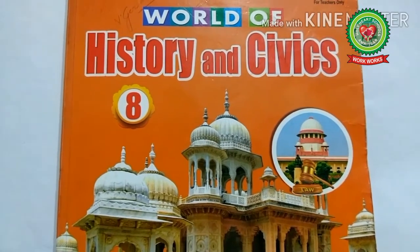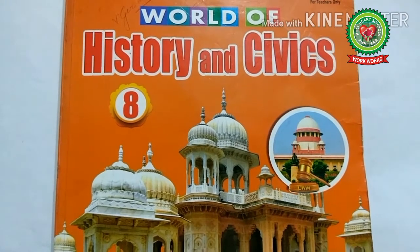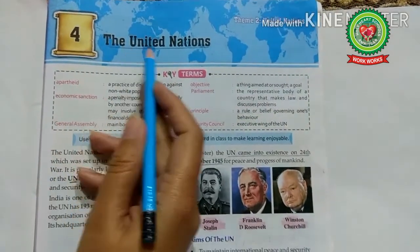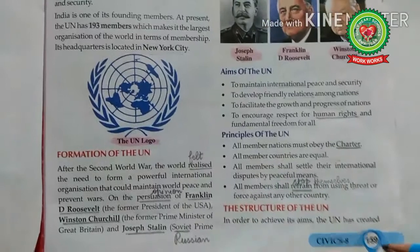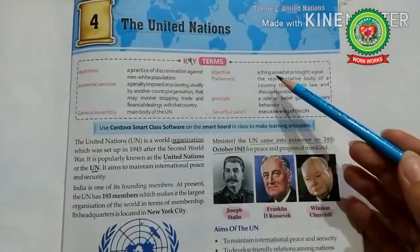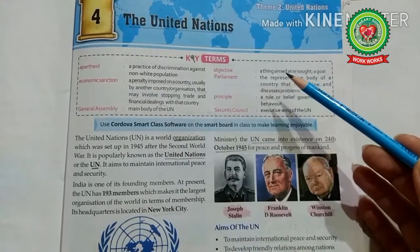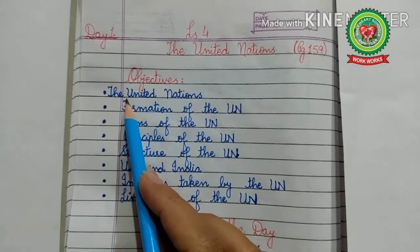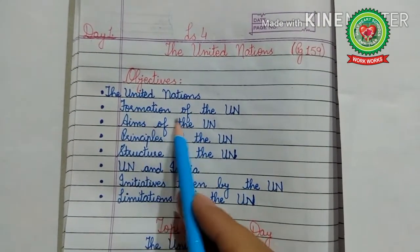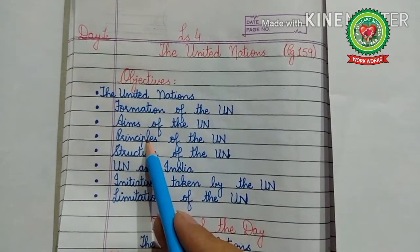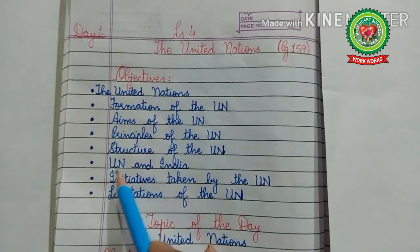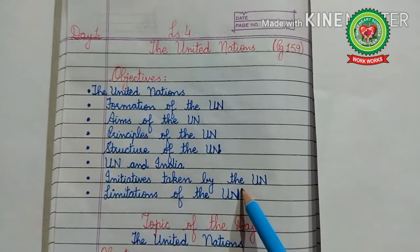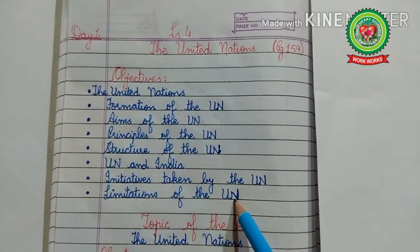Hello everyone, open your history and civics book, class 8. Today we are going to do lesson 4 of civics: The United Nations, page number 159. Before starting the lesson, let us discuss the main objectives: to know about the United Nations, its formation, aims, principles, structure, UN and India, initiatives taken by the UN, and its limitations.